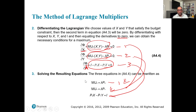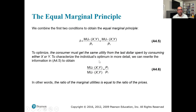We can see that these two expressions are equal to λ. So we get MUx / MUy = Px / Py, which gives us λ. This means marginal utility of x over Px equals marginal utility of y over Py.